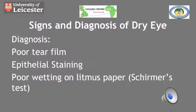When diagnosing dry eye, a thorough history must be performed. There are two other tests that can be used. The first is the Schirmer test, which is performed by using a 5x35mm strip of filter paper anchored in the lower fornix and kept in place for 5 minutes, at which point the length of the wetting is measured. Less than 5mm is considered diagnostic of tear deficiency.